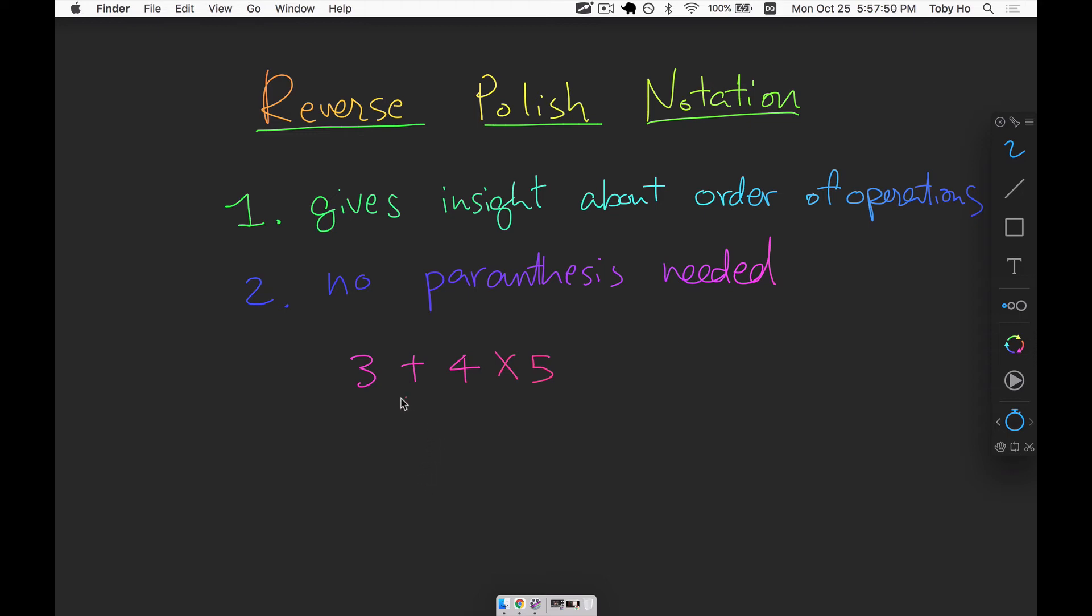That's not ambiguous only because we have this concept of operator precedence where the multiplication has higher precedence than 3 plus 4. Now, if we want to do it in the other order, we want to add 3 and 4 together first, we will have to use parentheses to override that precedence.